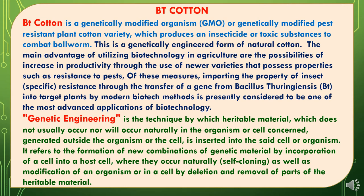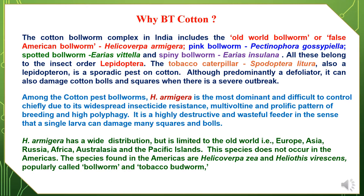To understand why BT cotton was incorporated and what the need was: the cotton bollworm complex in India includes the old world bollworm or false American bollworm, known as Helicoverpa armigera; the pink bollworm Pectinophora gossypiella; the spotted bollworm Earias vitella; and the spiny bollworm Earias insulana. These bollworm groups affect the cotton crop in a disastrous way. All belong to the insect order Lepidoptera. Among these, Helicoverpa armigera is the most dominant and difficult to control, mainly due to its widespread insecticide resistance.